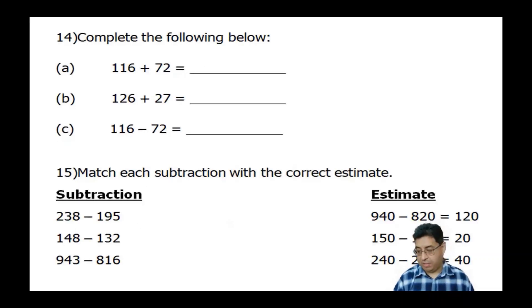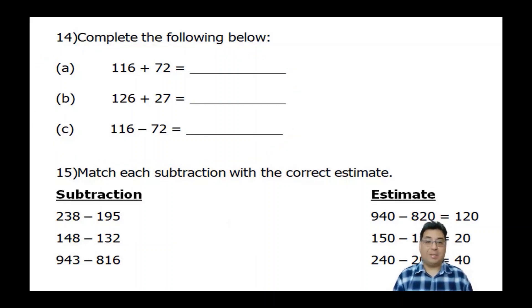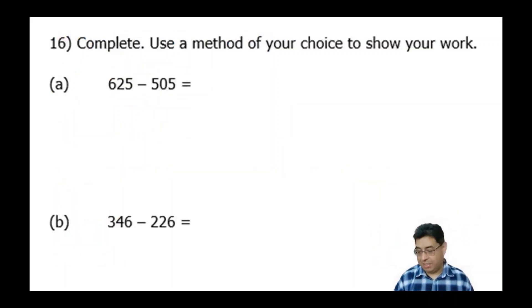Number 14 says complete the following below. So do what it asks, please. Just complete it as it says here. And 15 is just matching the subtraction to the estimate here. You're just going to draw a line. Number 16 says complete. Use a method of your choice to show your work. So again, please read the directions carefully and do what it asks here.